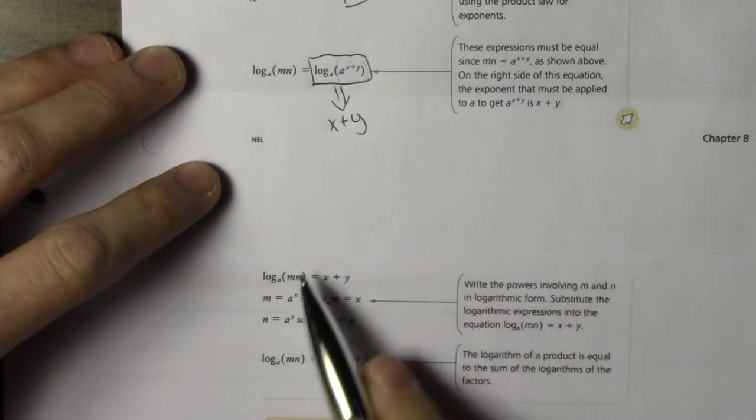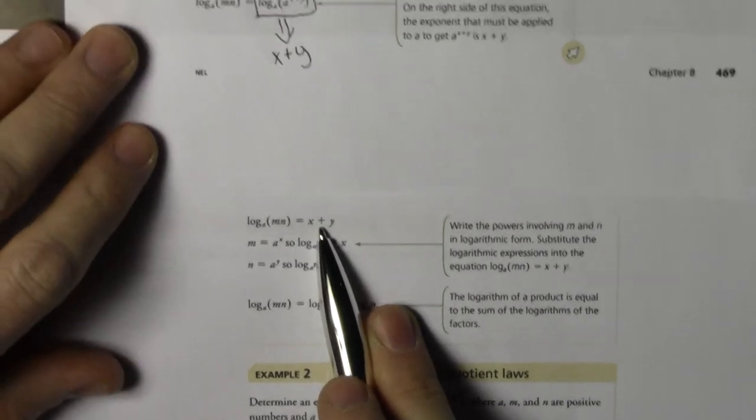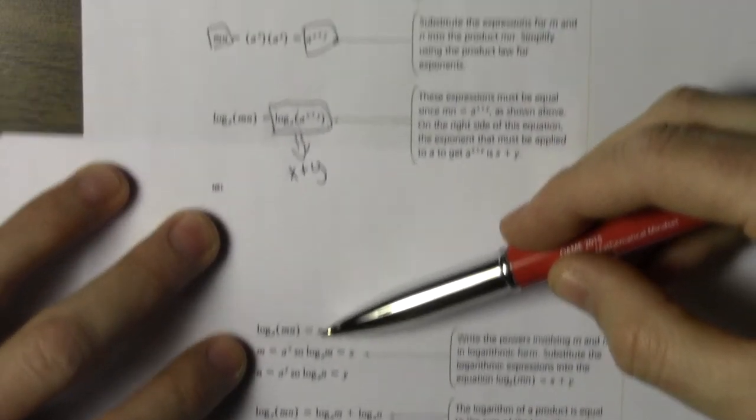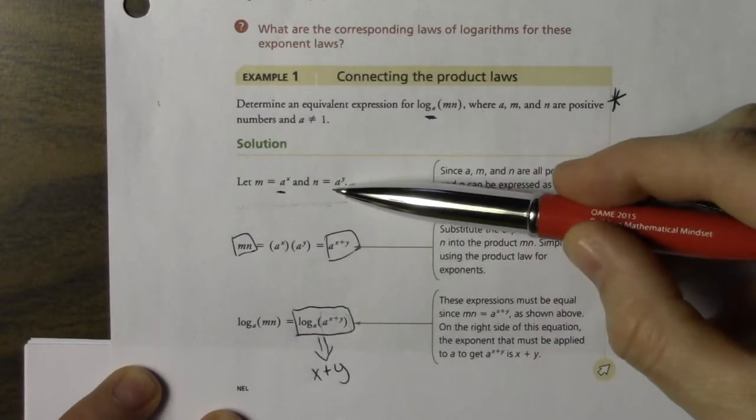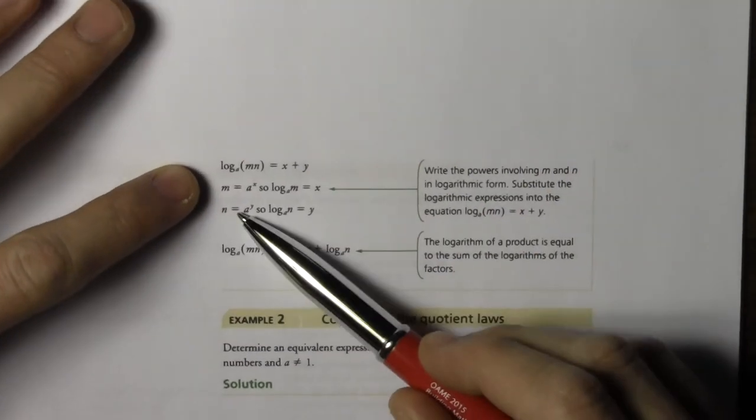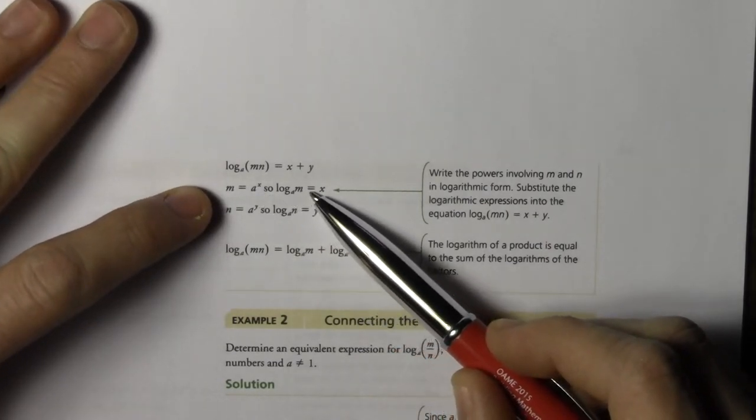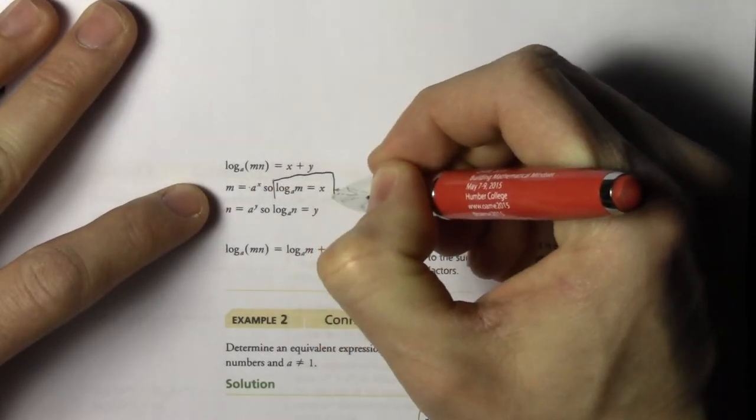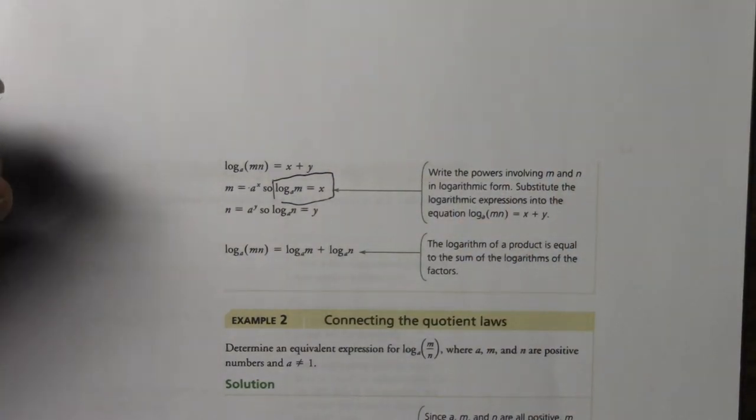All right, so if that's x plus y, we can sub it in and now we have this log m n is equal to x plus y. Okay, we also know way back at the beginning that m is a^x and n is a^y. We define that. Okay? If m is a^x, a raised to the exponent of x, therefore log base a m is equal to x. Any questions about this? Why is that the case?